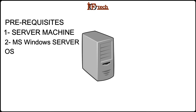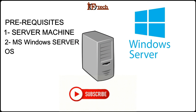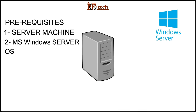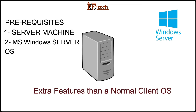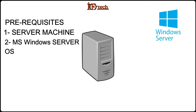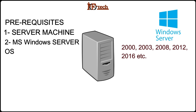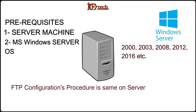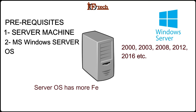Number two: Microsoft Windows Server Operating System. Since I am working on a Microsoft operating system, not Linux, I will mention only the Microsoft Windows Server OS. It comes with extra features compared to a normal client OS. Windows Server has versions like 2000, 2003, 2008, 2012, and 2016. The procedure to configure an FTP server is almost the same on both Windows Server and client operating systems — the only difference is the number of available features.